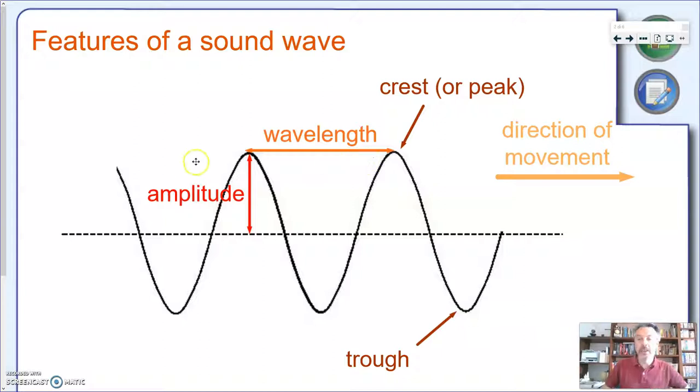The second quantity is called the wavelength. And as you can imagine, it's really the distance between the waves measured, for instance, between two consecutive crests. Or again, it's also the distance between two consecutive troughs. So we have the amplitude and we have a wavelength.